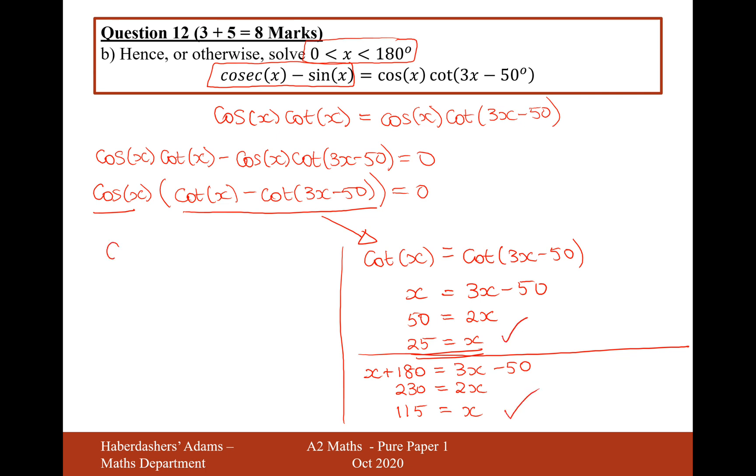And then for the left-hand side that we had, cos x equals 0, then x is going to equal, now when does it equal 0? I think it was pi by 2 and 3 pi by 2. So there we are, we have 4 answers for this question here. 2 for the cos x equals 0 and 2 for the cot x equals cot 3x minus 50.